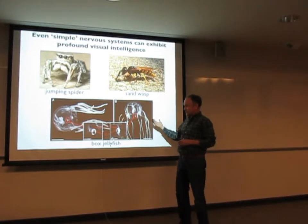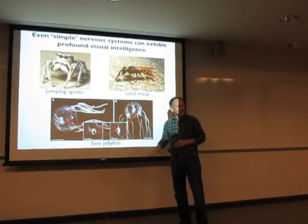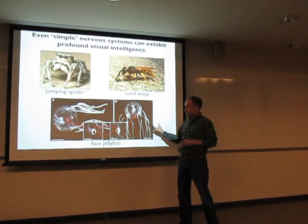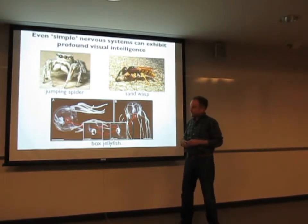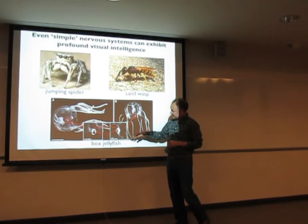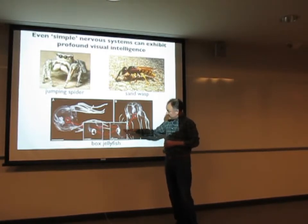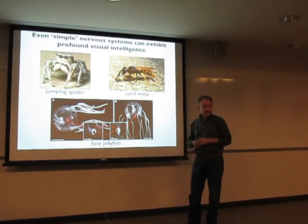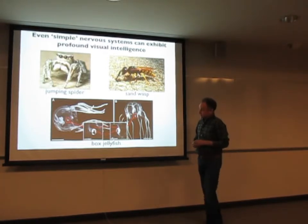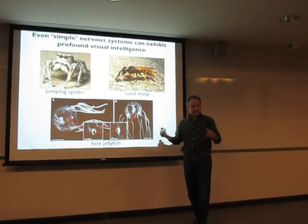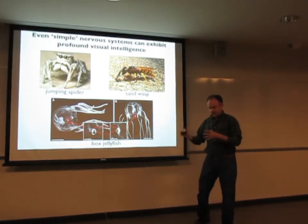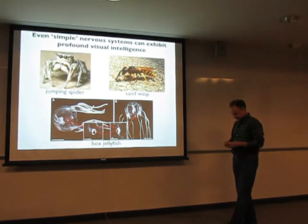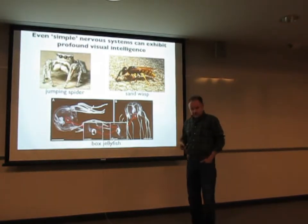The jellyfish is a very unlikely system — it doesn't even have a brain, yet it has a very elaborate visual system. The box jellyfish has a total of 24 eyes, and what's really amazing, as recently discovered, is that some of these eyes have almost perfect optics — they're nearly aberration-free. It's thought that they use this visual system to navigate within the banks of the river, figuring out where they are and where the prey is.